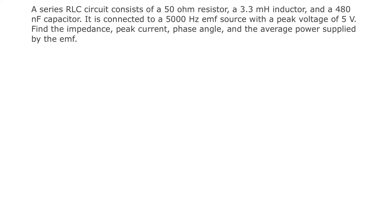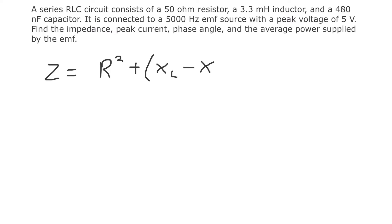The formula for impedance is Z — that's the symbol for impedance — equals the square root of R squared plus the quantity (XL minus XC) squared, where XL is the inductive reactance and XC is the capacitive reactance. Take the square root of that entire quantity to get your impedance.